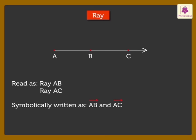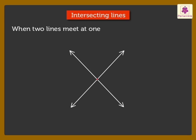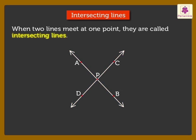Now, let us learn about intersecting lines. Here, line AB and CD meet at point B. Hence, line AB and line CD are called intersecting lines.